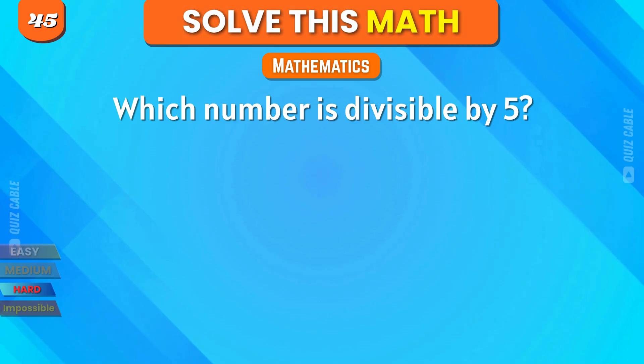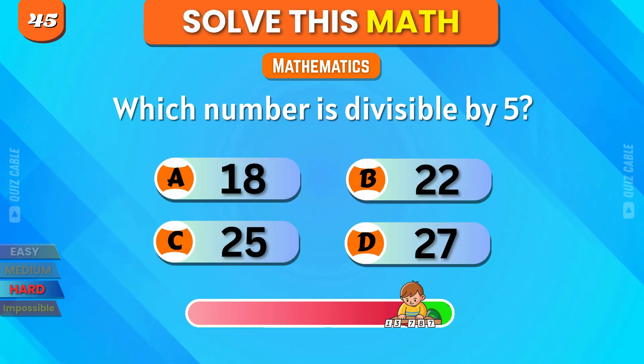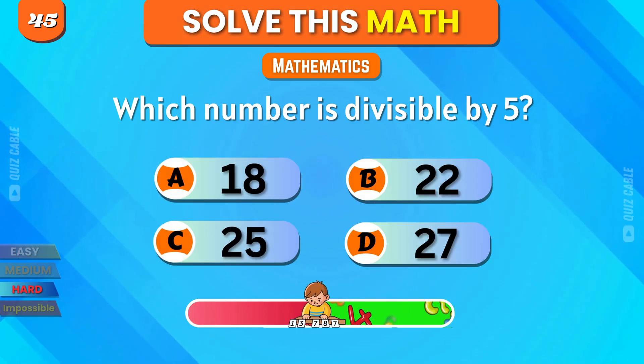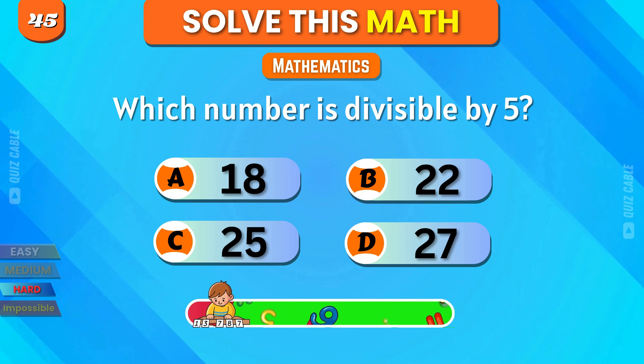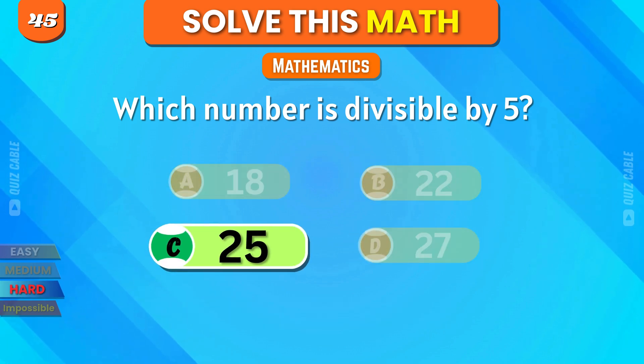Which number is divisible by 5? 18, 22, 25, 27. That's right, 25.